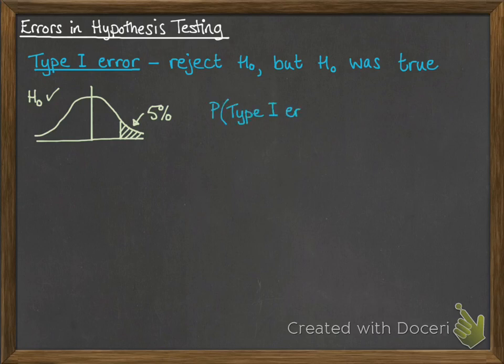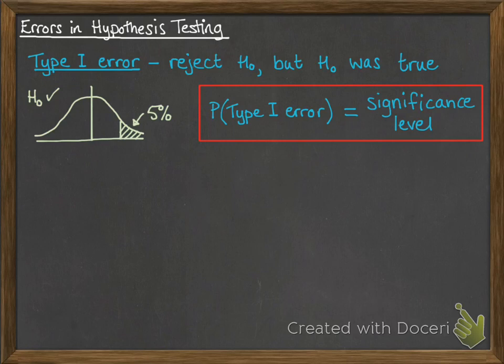So the probability of a Type 1 error is really easy to pick out. It's simply the significance level of your test. And this is where, when you looked at questions earlier on and you changed the significance level, it changed whether you would accept or reject the null hypothesis. So the significance level that you do things to makes quite a big difference.